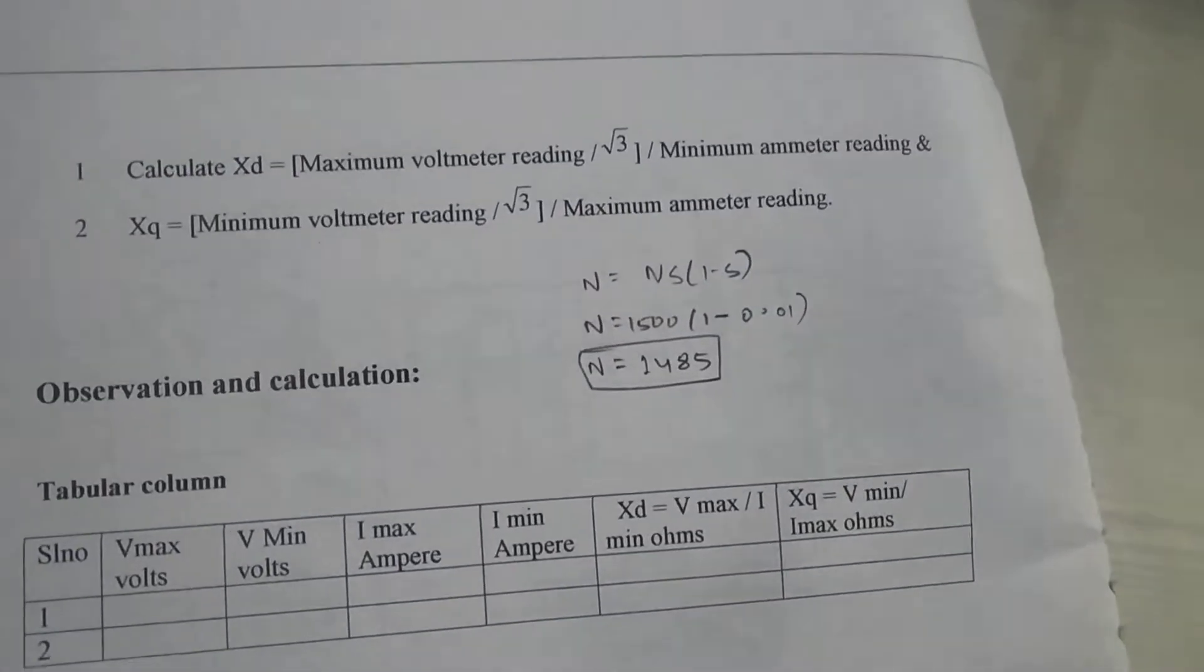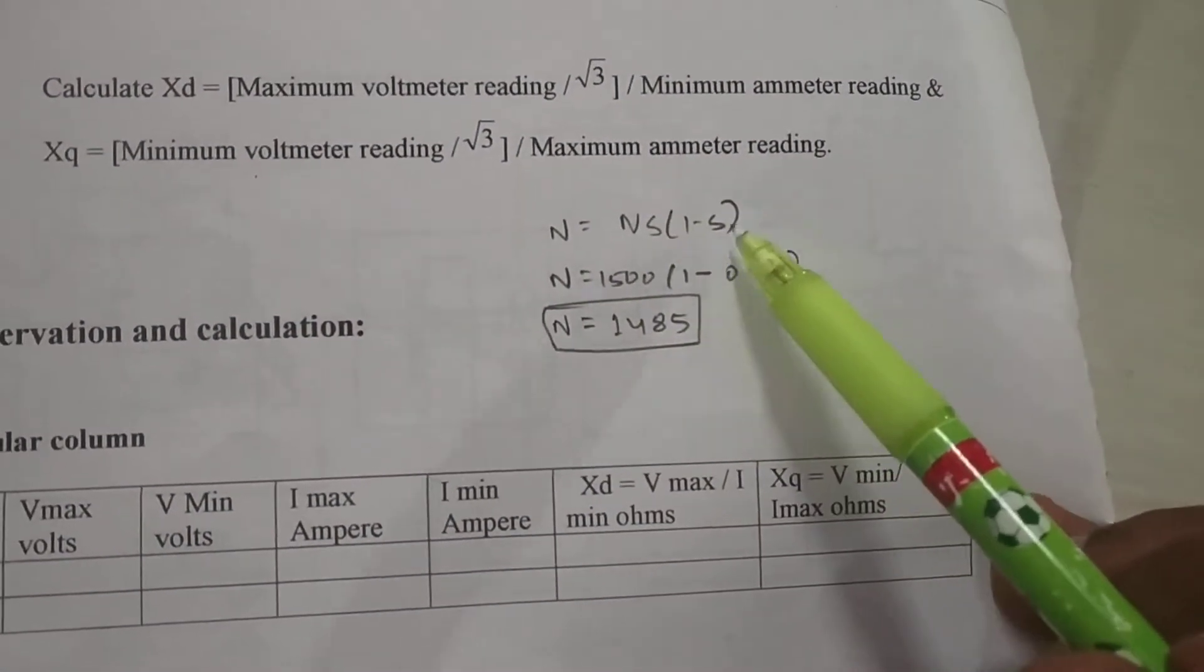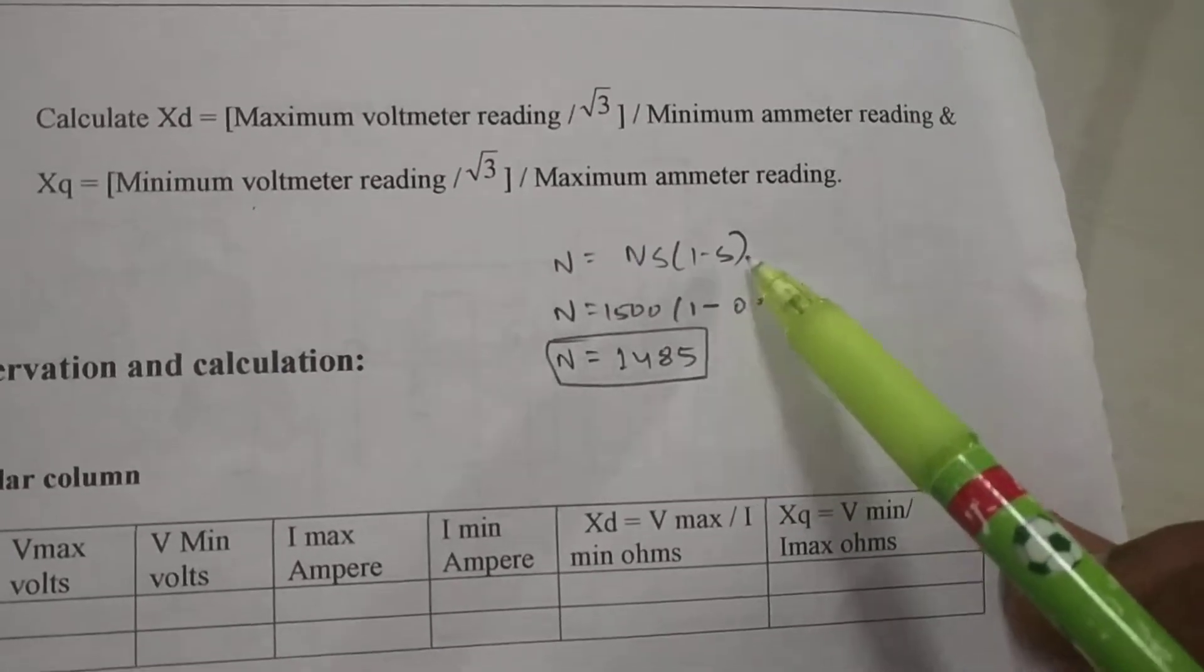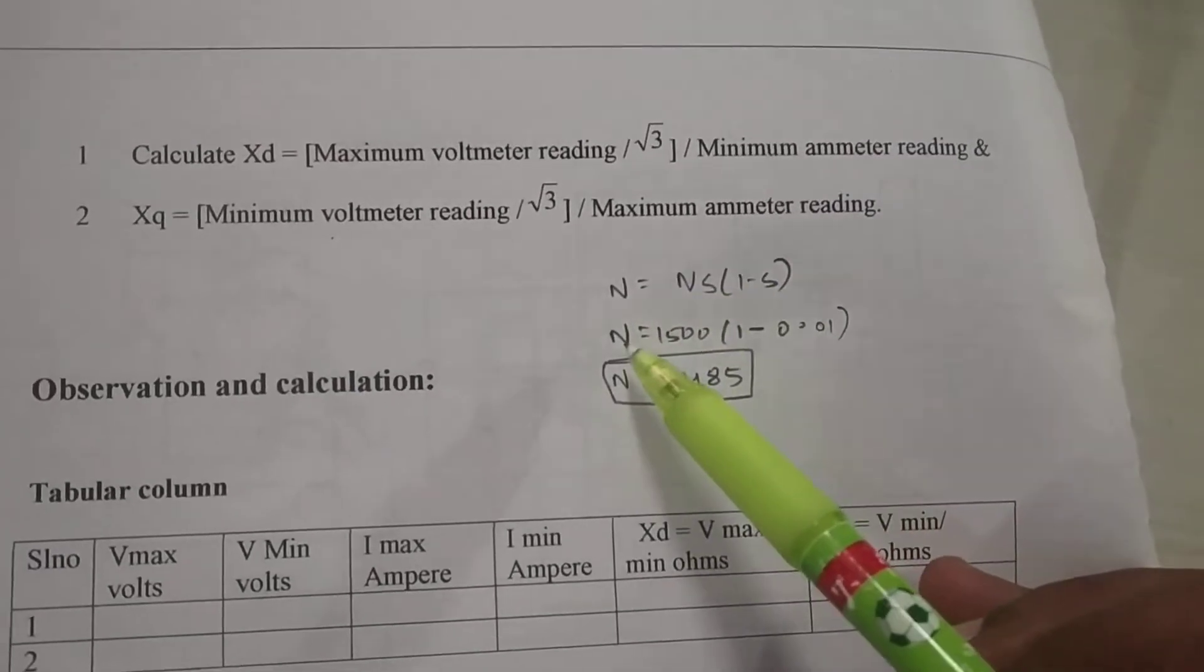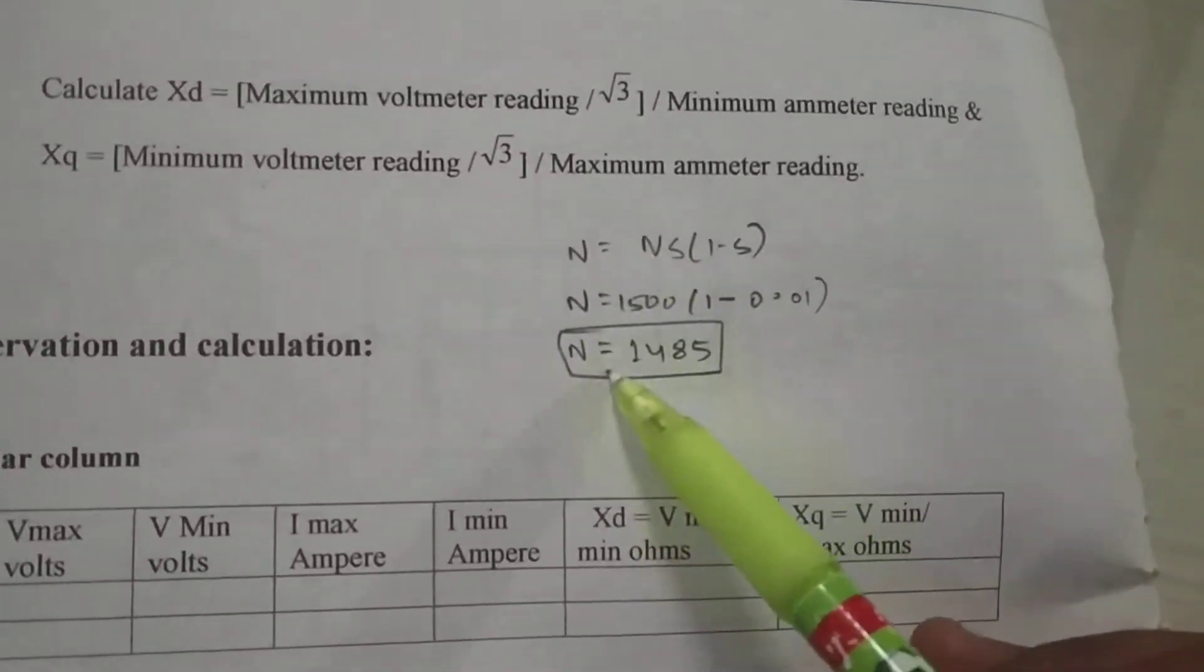That was a mistake, it is not till the rated speed of the motor. For 1% slip, substituting the value of 0.01 for S, we calculate the actual speed of the motor. When calculated, it comes to 1485. Now we will run the motor at that speed, we run till 1485.